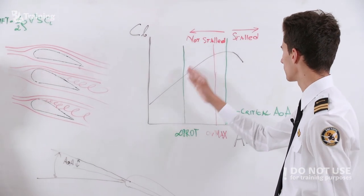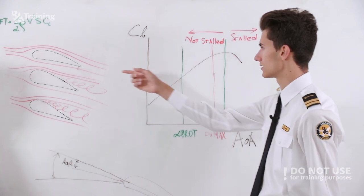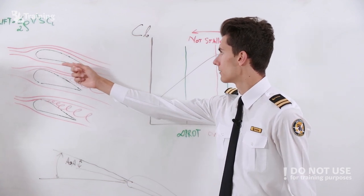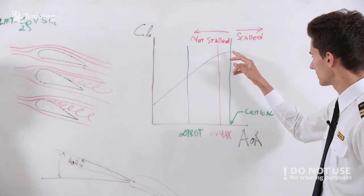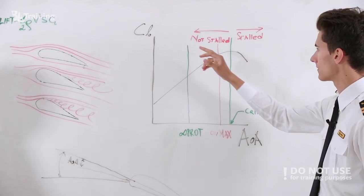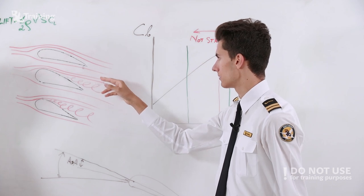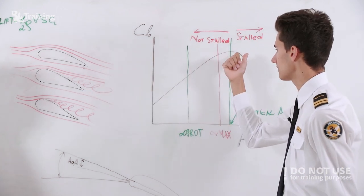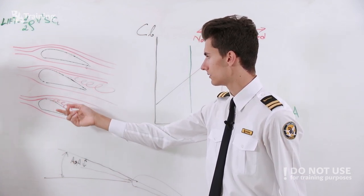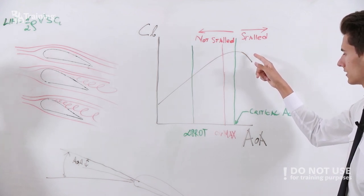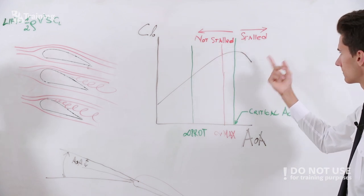From zero angle of attack to the critical AOA — shown by the green line — you have laminar airflow around the airfoil. At the critical AOA, where the coefficient of lift is at its peak, the airflow starts separating. Once you pass that point, the separation moves so far forward that you completely lose lift — that's when stall happens. Even though you keep increasing angle of attack, the coefficient of lift drops dramatically.